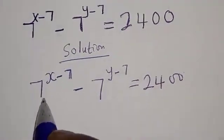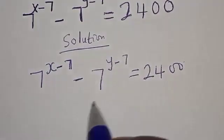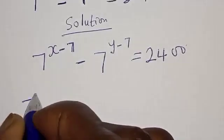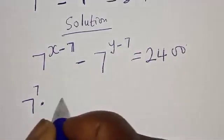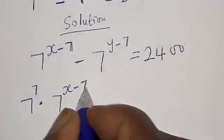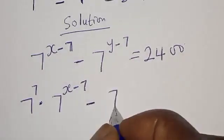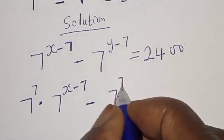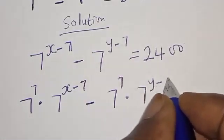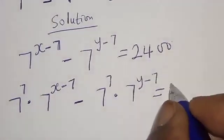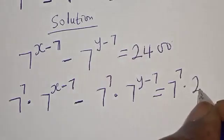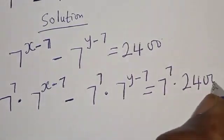Let's try to manipulate this by multiplying both sides by 7 raised to power 7. Then we have: 7 raised to power 7, multiplied by 7 raised to power x minus 7, minus 7 raised to power 7 multiplied by 7 raised to power y, equals 7 raised to power 7 multiplied by 2400.